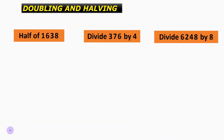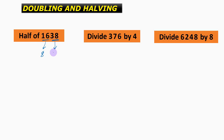Now let us check out questions where we need to divide quantities by 2, 4, or 8. The first question is: what is half of 1638? We are going to use the method of calculation using splitting. Taking half of a number means dividing by 2. So 16 divided by 2 gives us 8, and 38 divided by 2 gives us 19, hence the answer is 819.